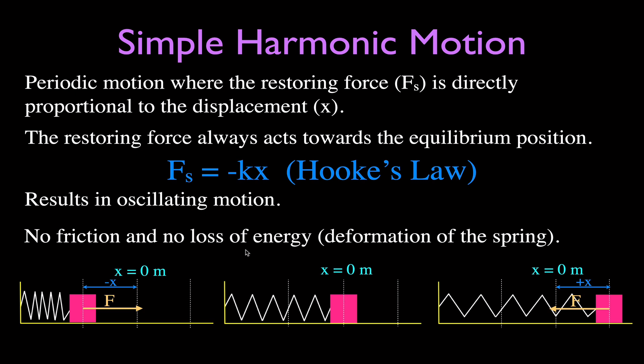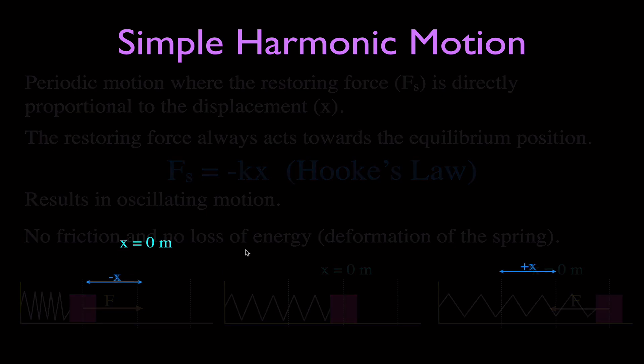Normally, as the spring moves back and forth, it would heat up and some energy would be lost, causing the spring to eventually slow down — the same would occur with friction. But we use an ideal situation assuming no friction and no loss of energy from the system. Those are the important characteristics of simple harmonic motion.